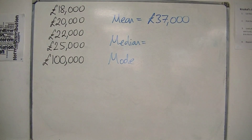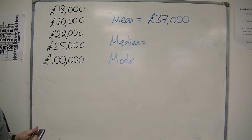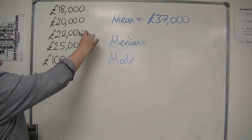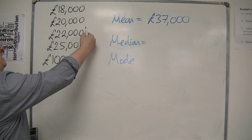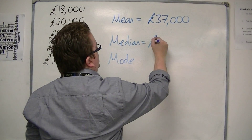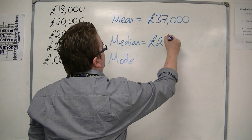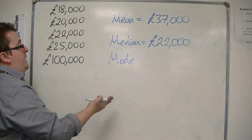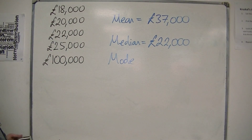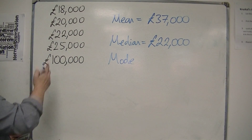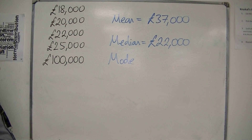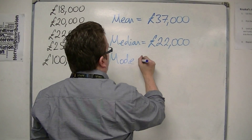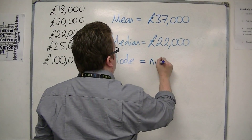Then we have the median. I've written them in order, so you can easily see that the median — the middle value — would be £22,000. And finally, the mode. It turns out that no one is currently on the same salary, so there is no mode.